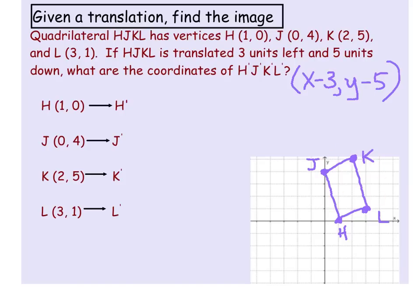Using our rule, if the point H is at (1, 0), if I take that x value of 1 and subtract 3, 1 minus 3 is negative 2. If I take that y value of 0 and do 0 minus 5, I get negative 5. So the image of H is at (-2, -5), and that would be this point right down here. That's H prime. If you count on your graph, you can see one, two, three units to the left, one, two, three, four, five units down. So all we've done is slid H to the left and down.